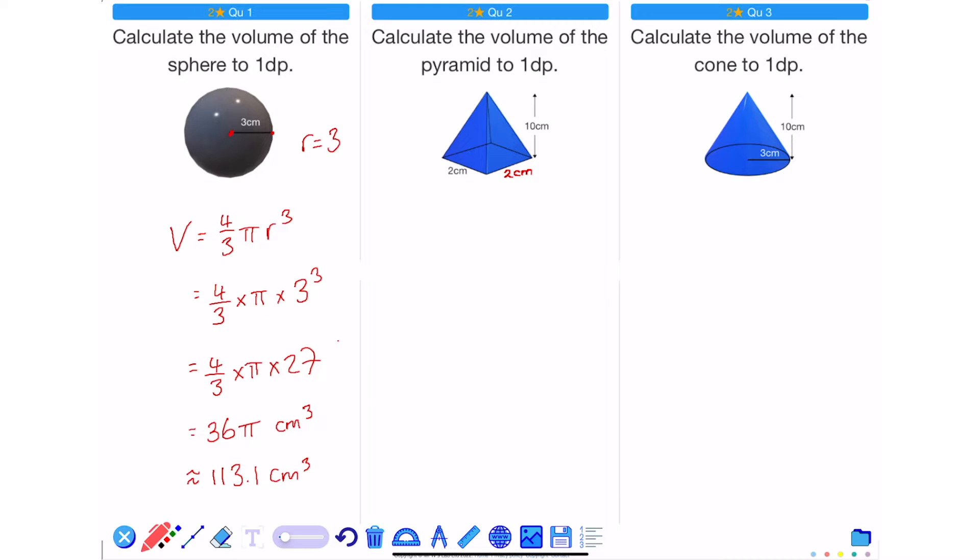To work out the volume of any pyramid, I use the volume is equal to 1 third times the area of the base, and then times it by the height.